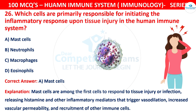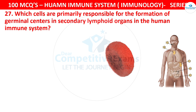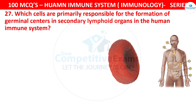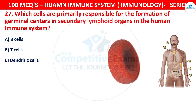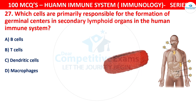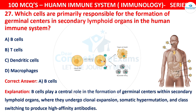Question 27: Which cells are primarily responsible for the formation of germinal centers in secondary lymphoid organs in the human immune system? The options are B cells, T cells, Dendritic cells, or Macrophages. The correct answer is A, that is B cells. B cells play a central role in the formation of germinal centers within secondary lymphoid organs, where they undergo clonal expansion, somatic hypermutation, and class switching to produce high-affinity antibodies.